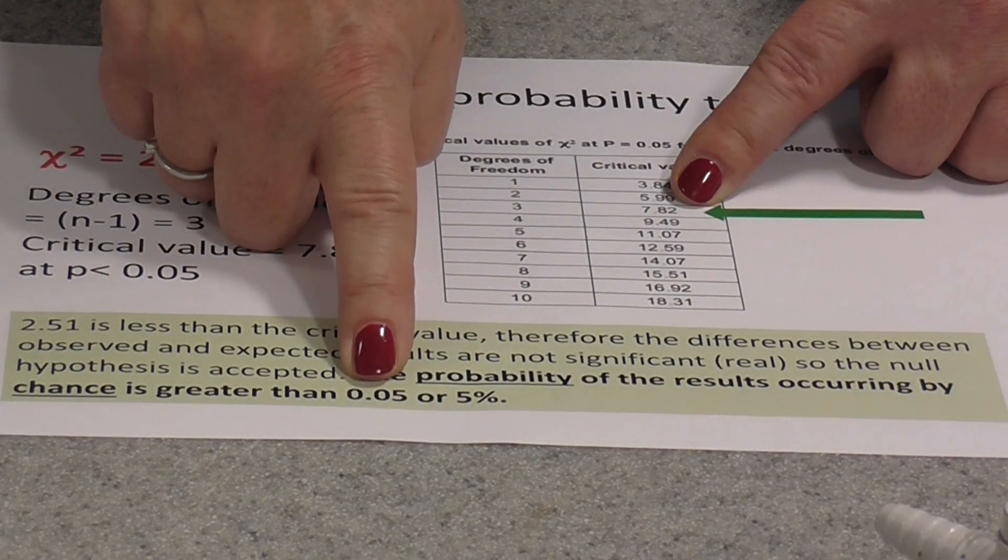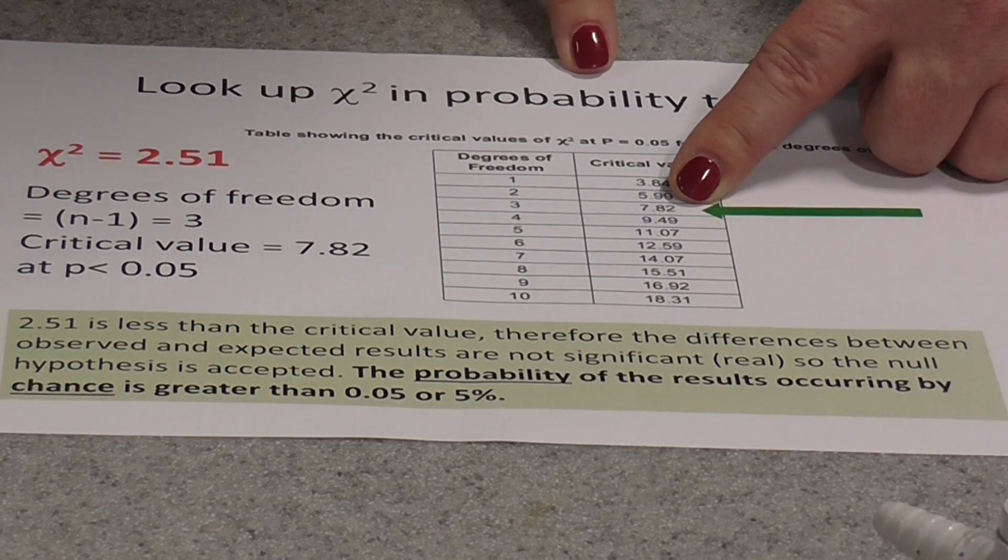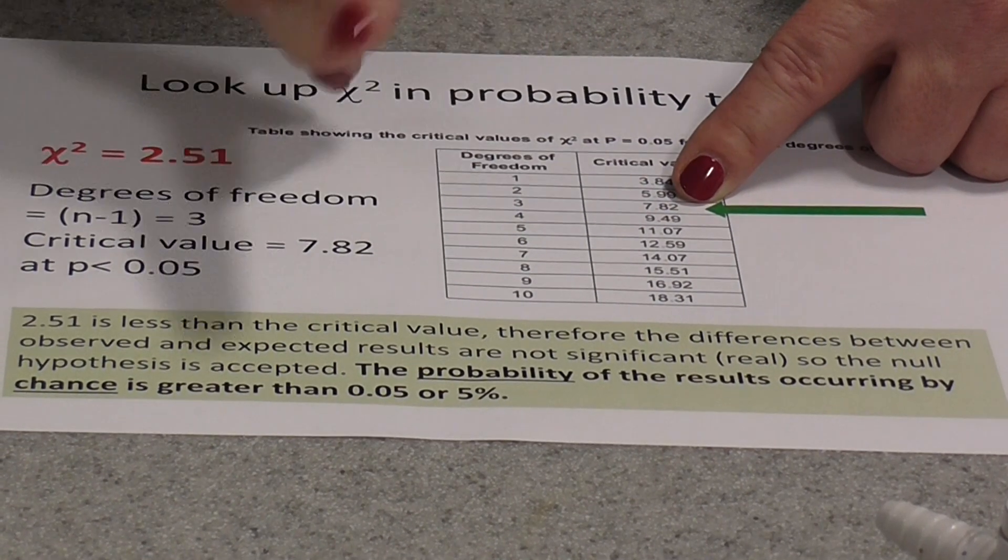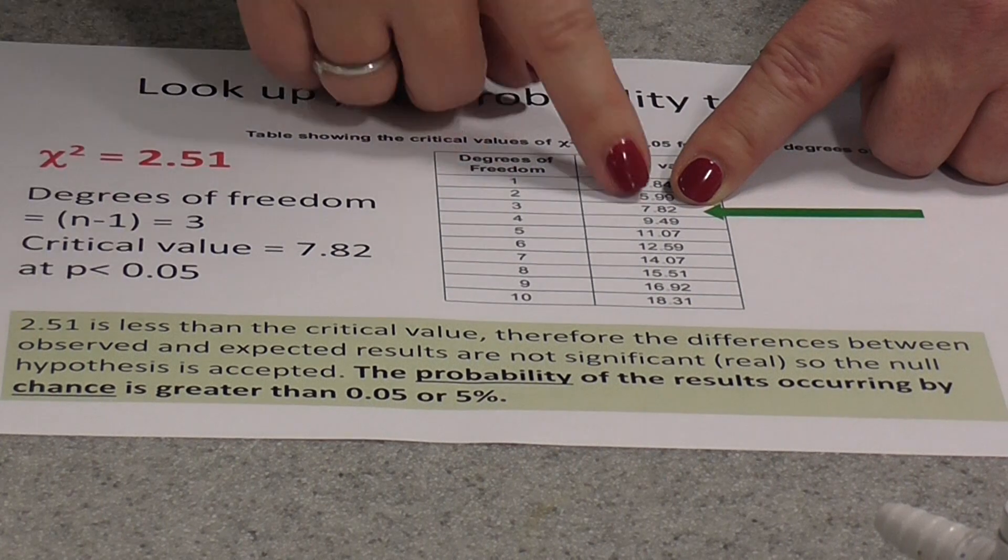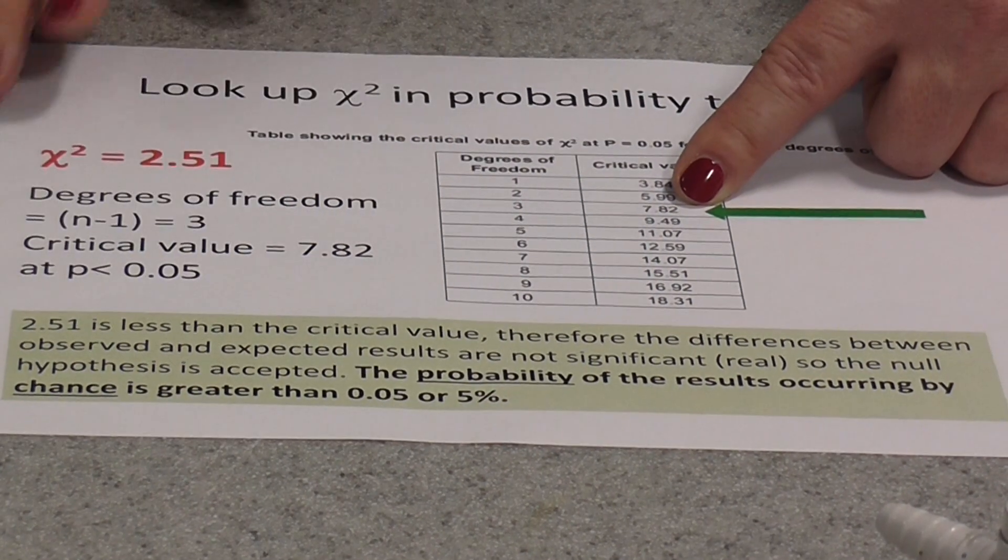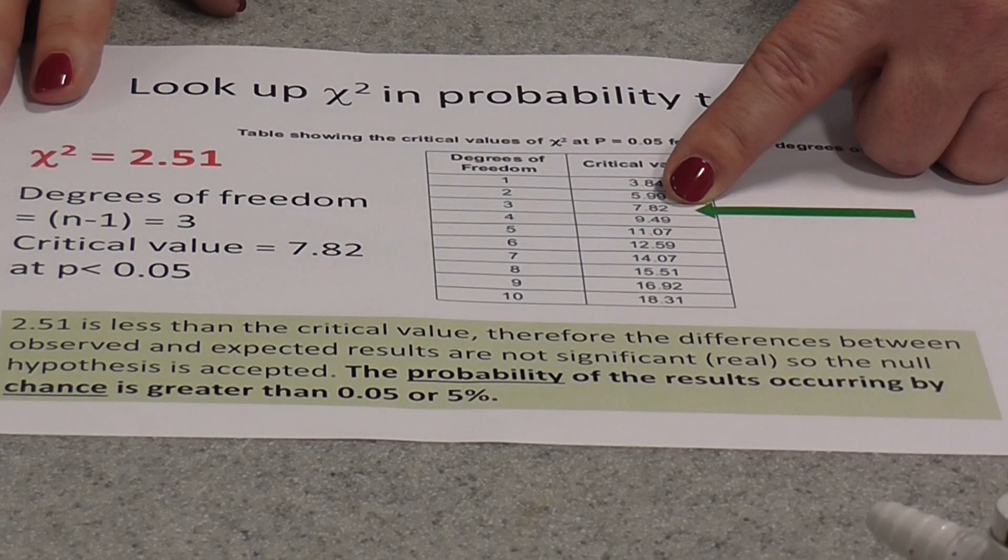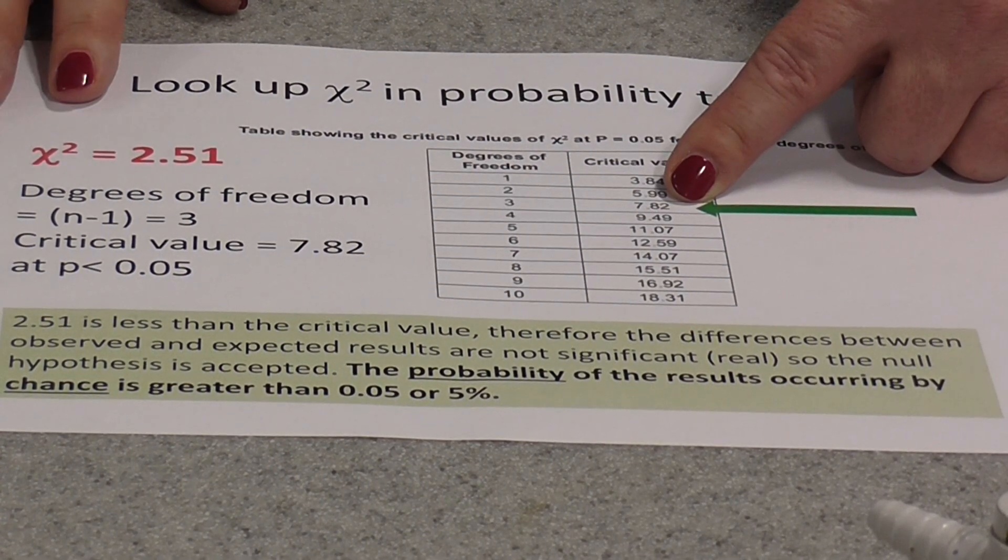or in other words 5%. So there is no real difference between the observed and expected results. Obviously if you get a chi-squared value that is higher, then it would be the reverse conclusion and the results would be significant. There would be a significant difference between observed and expected results.